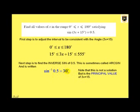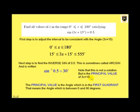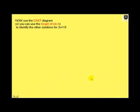Notice that the angle that we have found, 30 degrees, is not actually the solution, but it is the principal value of 3x + 15. That means that it is the angle in the first quadrant, or in other words, the angle between 0 and 90 degrees.